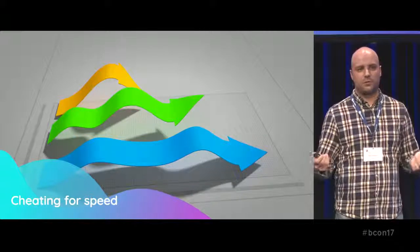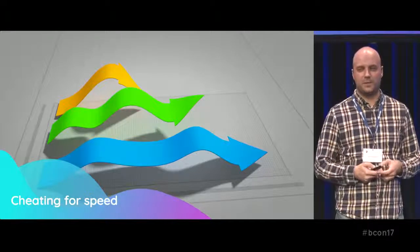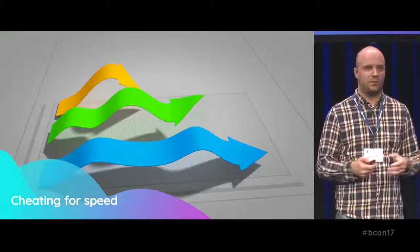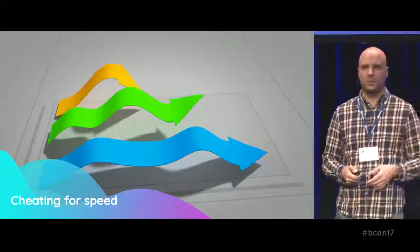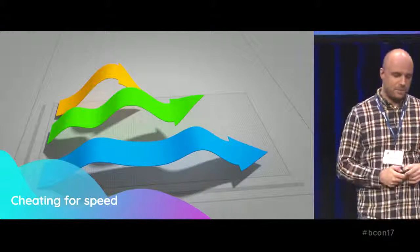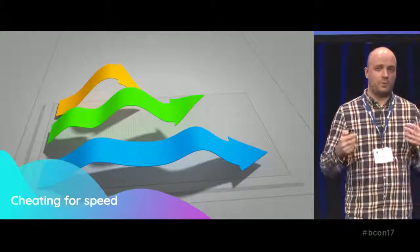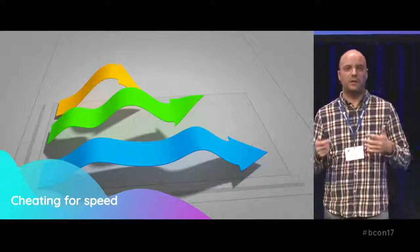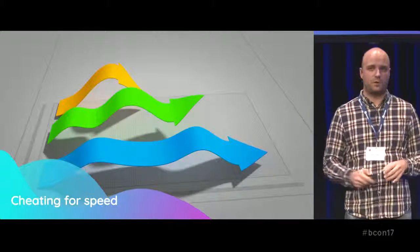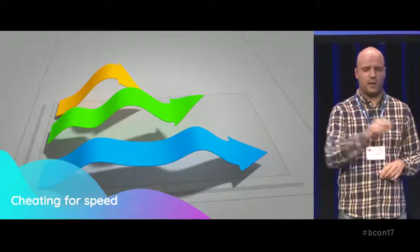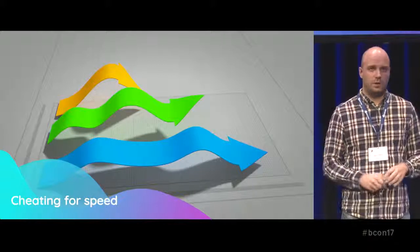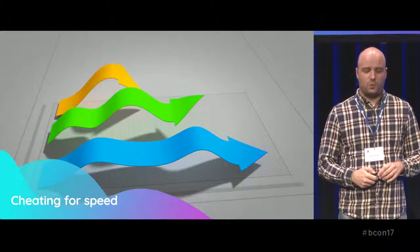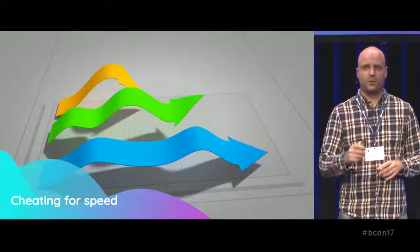If you search for Blender speed-up tips online you'll see the usual Cycles advice: reduce bounces, reduce samples, use clipping. But there's no way to get it as fast as we need. We need the busiest frame of an animation to render in 20 seconds on an average desktop computer — and there's no way to get a noiseless result in Cycles at that speed, even with the denoiser.